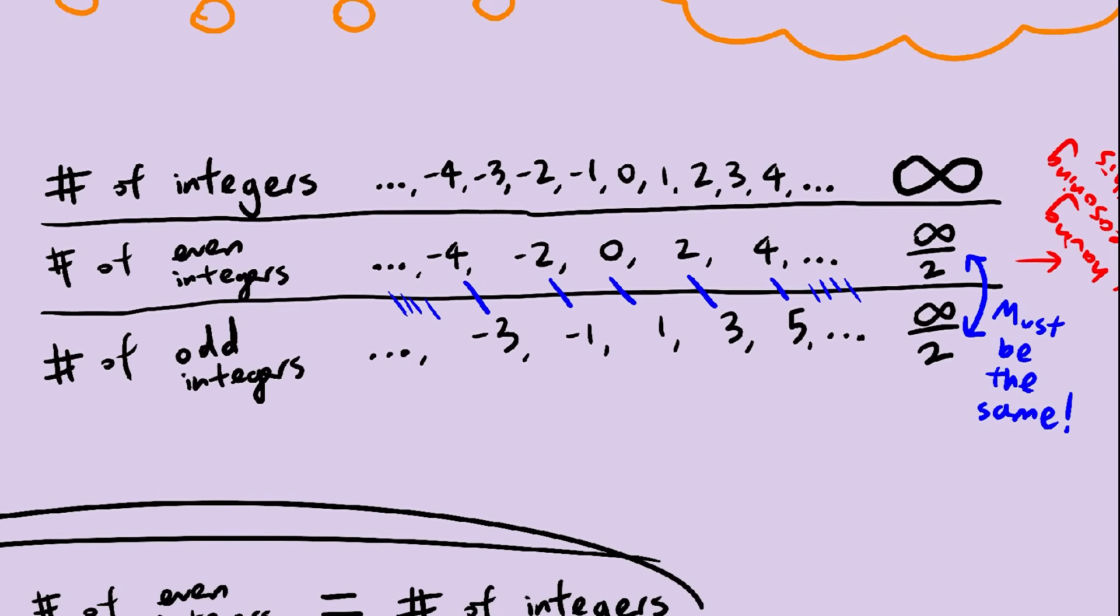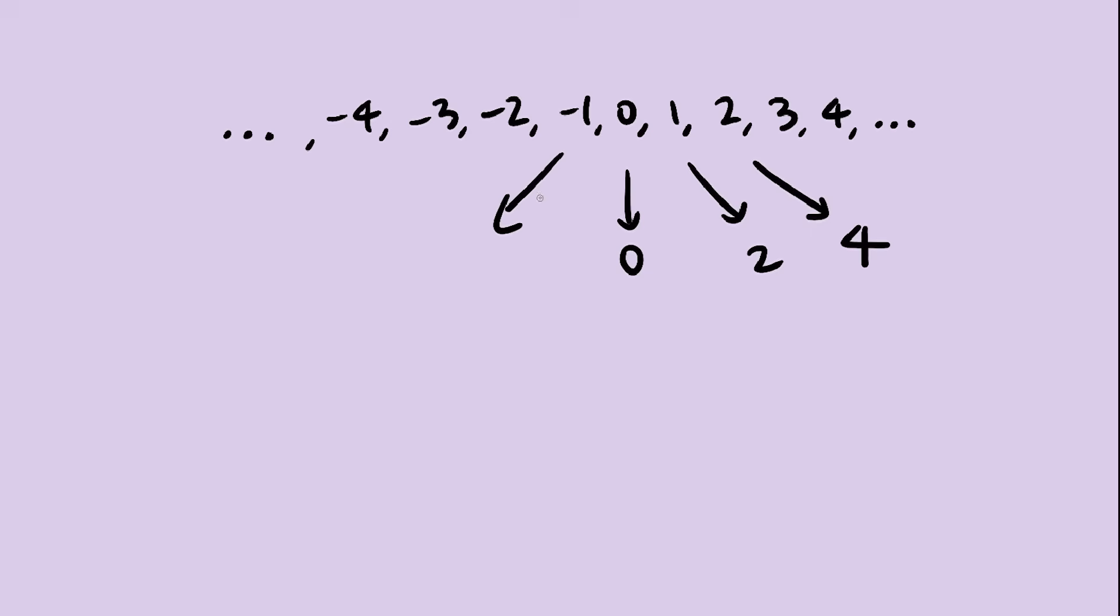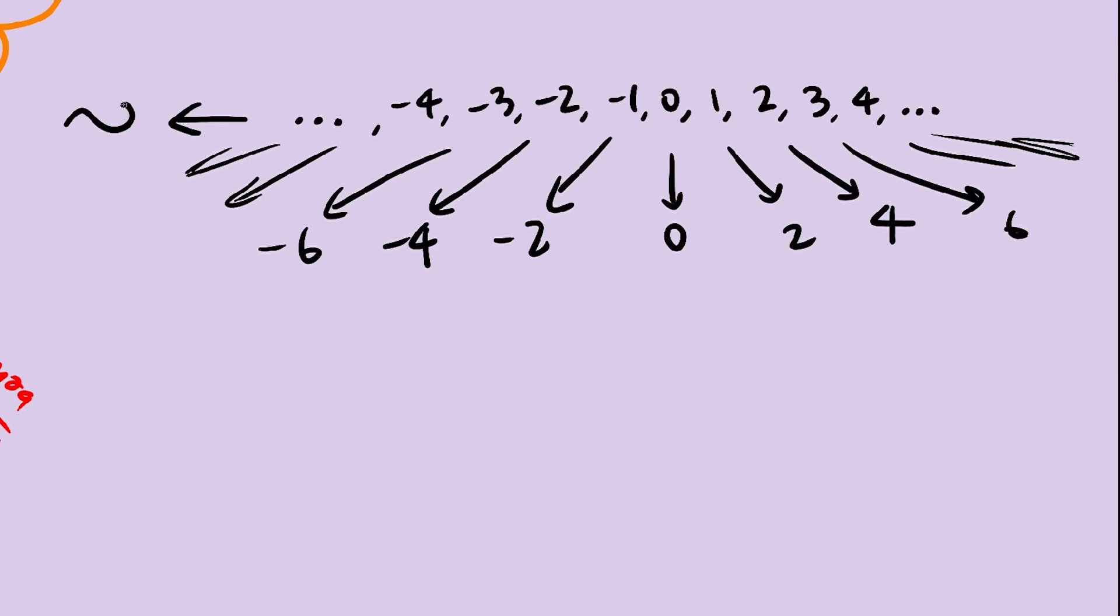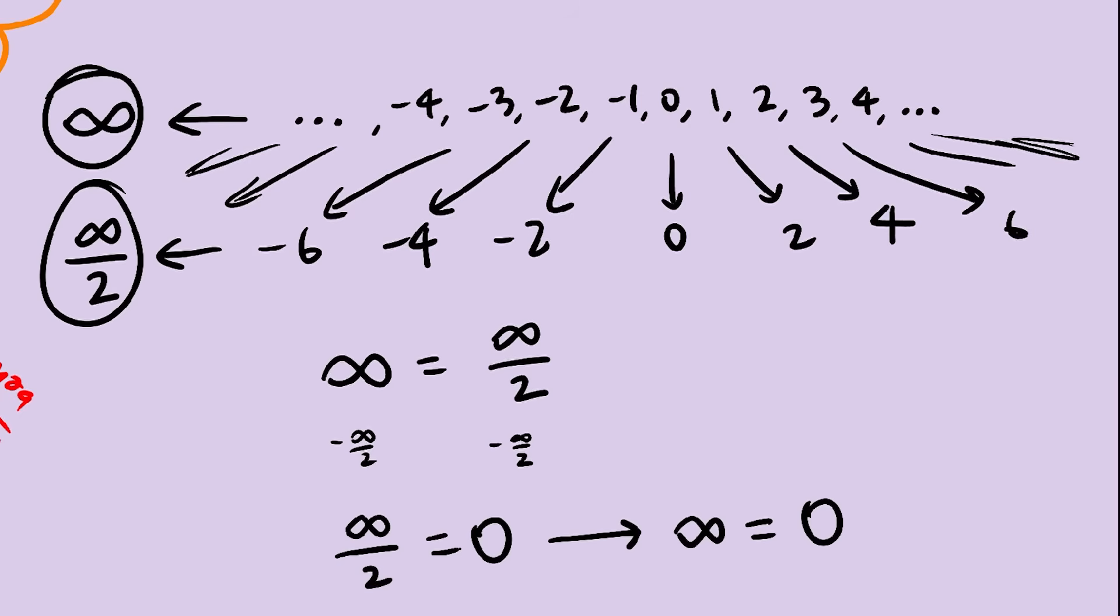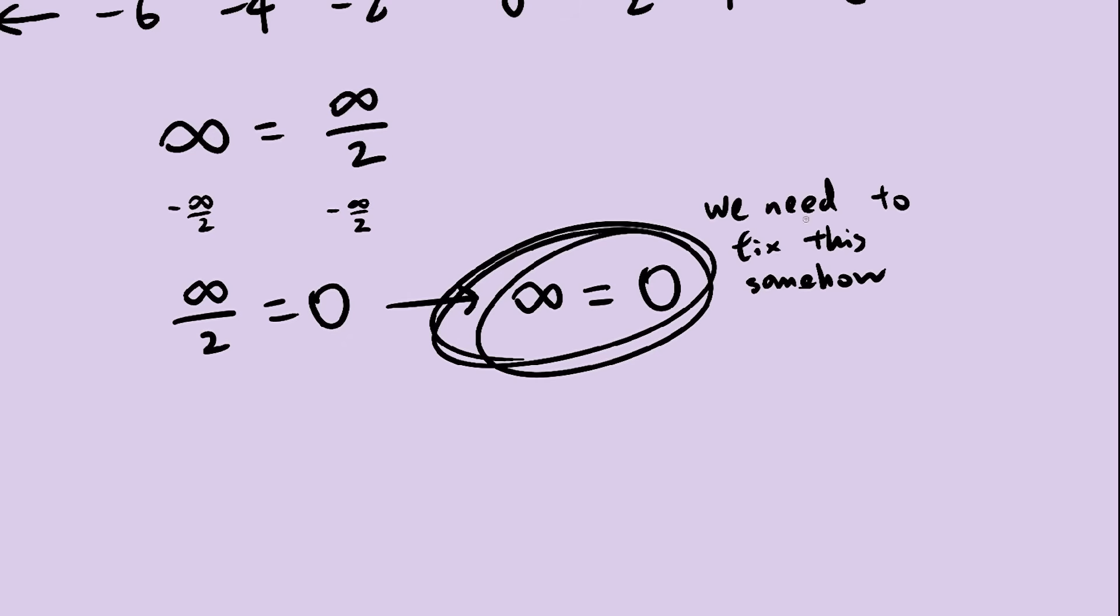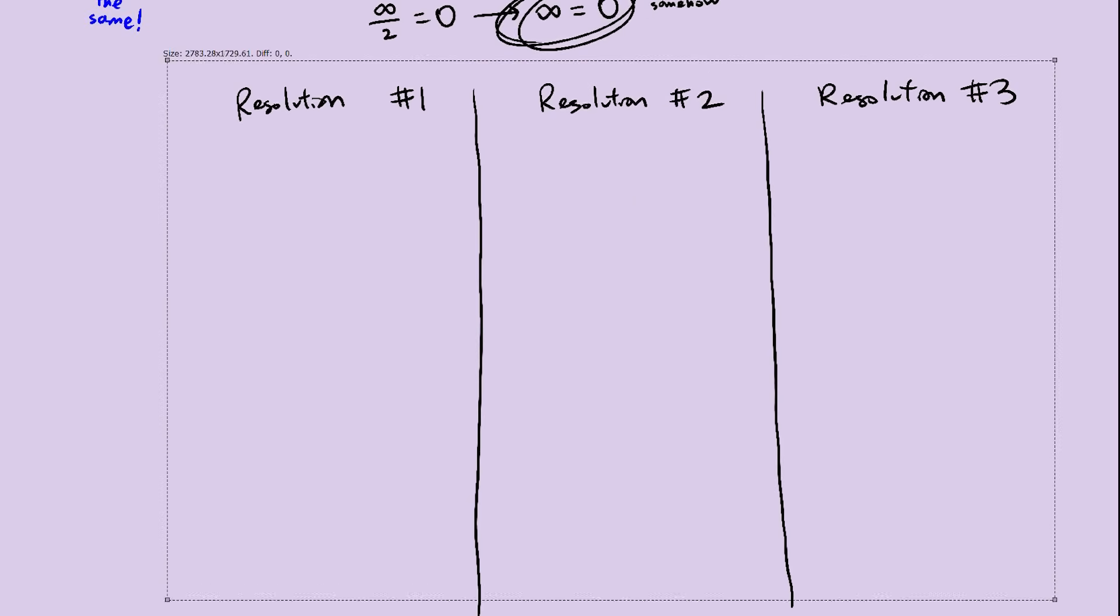Things make intuitive sense now, but the issue is we can still form this bijection. How do we address this? This bijection implies that infinity equals infinity over 2. Subtract infinity over 2 from both sides, and we get infinity equals 0. There are three ways to resolve this paradox. There are probably more, but these are just the first three that came to mind.